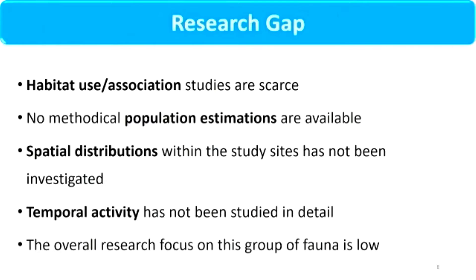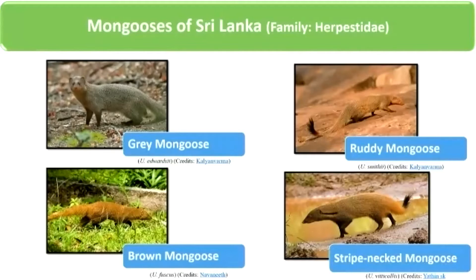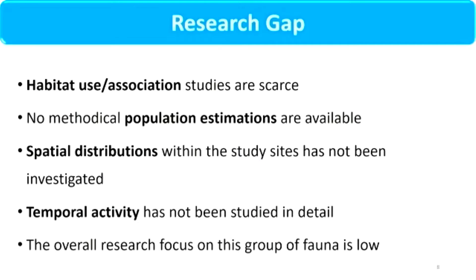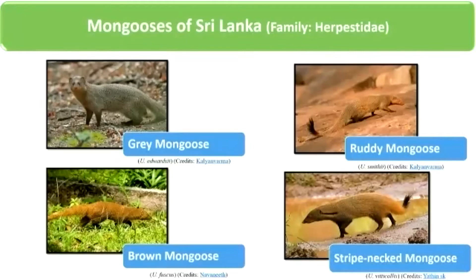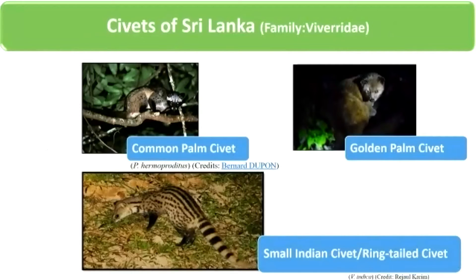When it comes to the research gap, overall we focused on all these areas; however, this presentation will be on their distribution within the selected areas. The mongoose species found in Sri Lanka are the grey mongoose, ruddy mongoose, brown mongoose, and the striped-necked mongoose. There are three civet species: the common palm civet, golden palm civet, small Indian civet, and the ring-tailed civet.